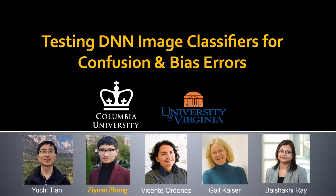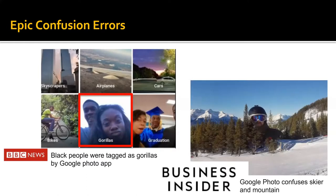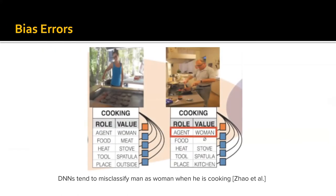DNN image classifiers have been widely used in many domains due to their outstanding accuracy. However, in recent years, it has been reported that they suffer from some undesirable errors. For example, as shown in this left image, it has been reported in BBC News that two black people were tagged as gorillas by Google Photo app. In this image, as reported in Business Insider, Google Photo confuses between a sky and a mountain. DNNs also tend to show bias. For example, they have been found to be very likely to misidentify a man as a woman when a person in an image is cooking.